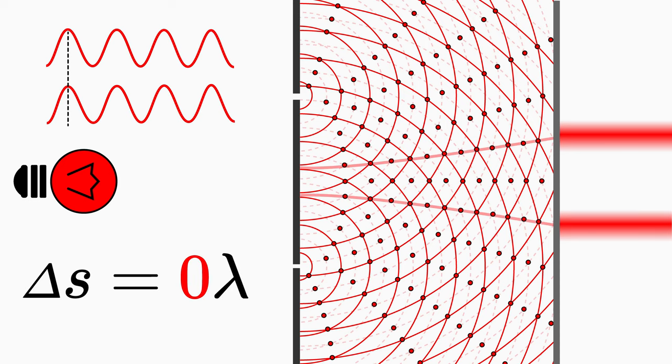The first order fringe occurs at a path difference of exactly one wave length, that is m equals one, and so on.